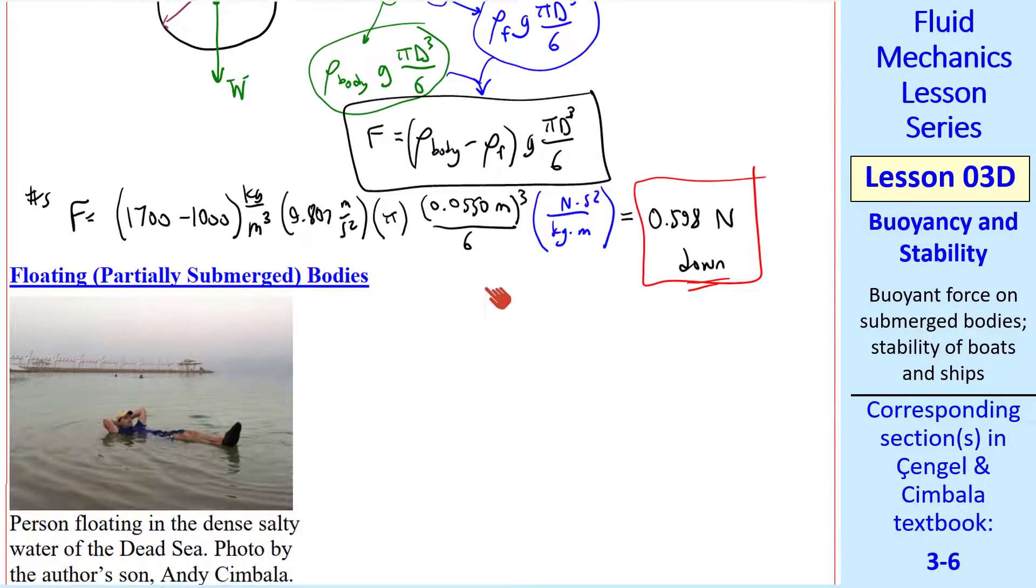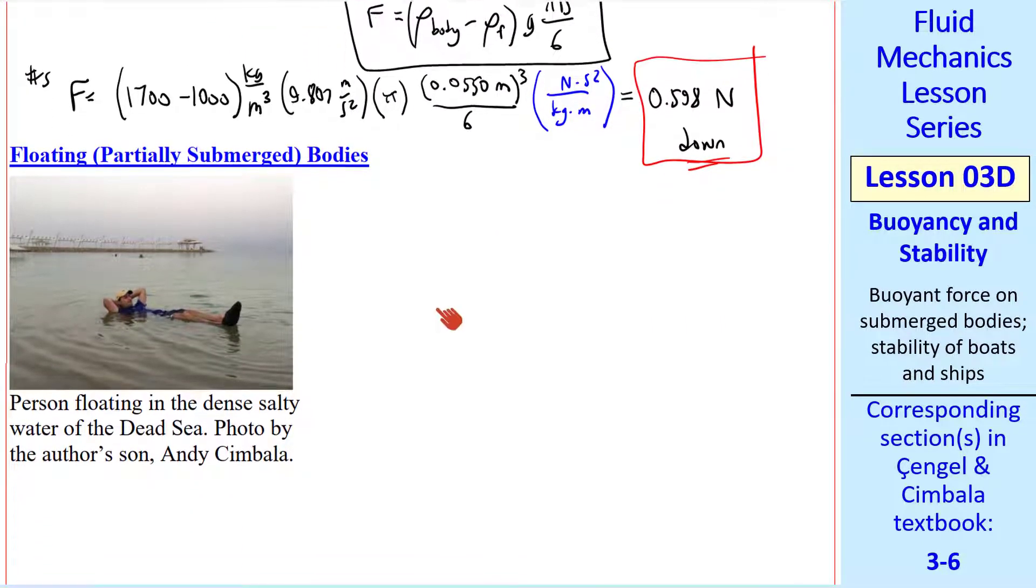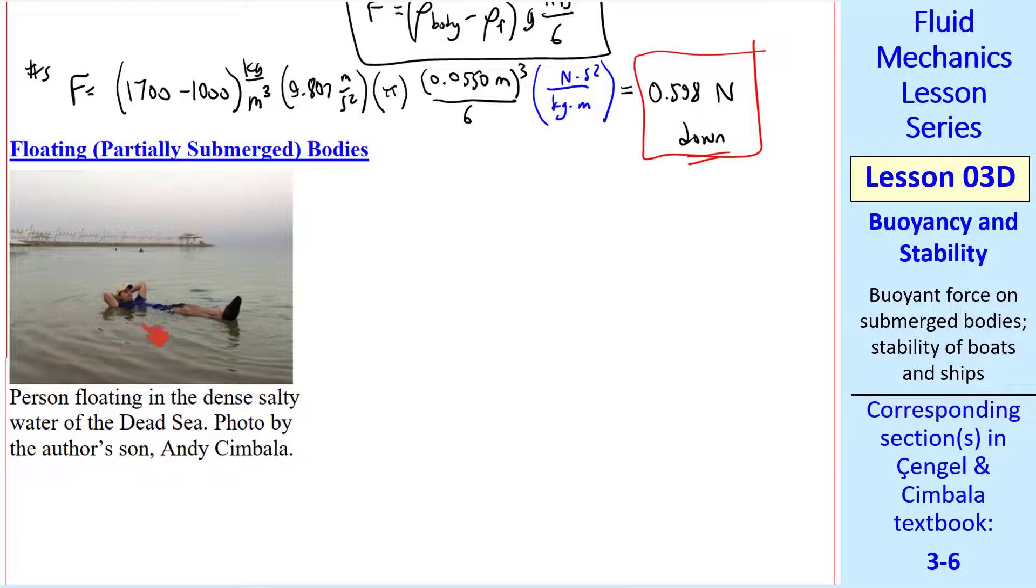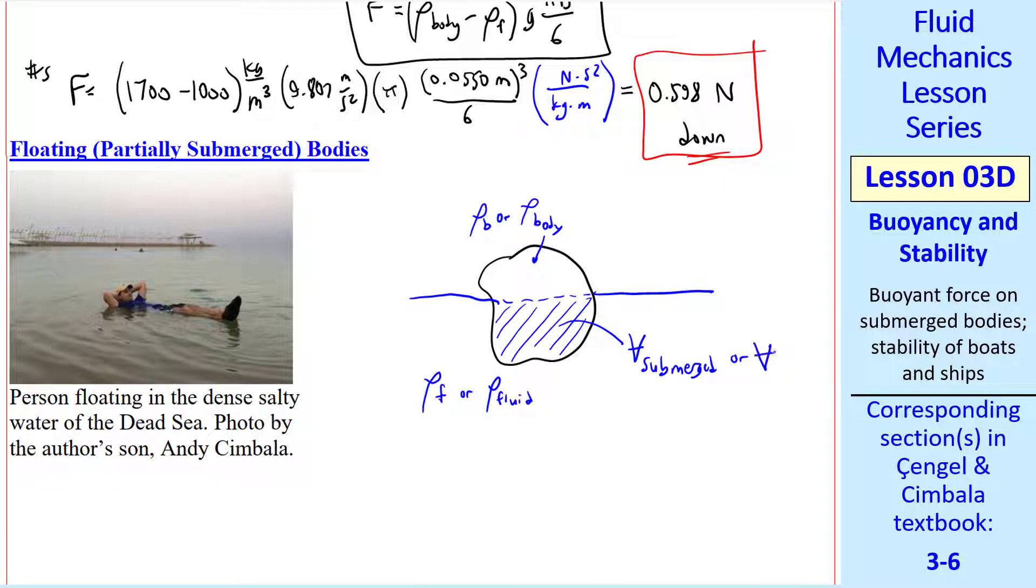Now let's consider partially submerged bodies, or floating bodies. Here's a picture my son took of one of his friends floating on the Dead Sea. In general, we have some body with density ρ_B, or ρ_body, and some fluid with a density ρ_F, or sometimes I'll spell it out, ρ_fluid. And this body is only partially submerged. I'll call that portion of the volume V_submerged or V_sub. The total volume is just V_total or V.